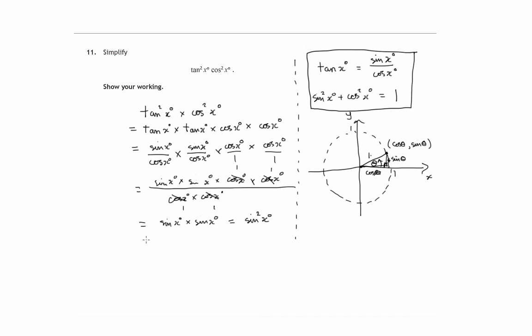Now there are shorter methods that would be acceptable. You could just immediately replace tan squared x by sin squared x over cos squared x. And then the cos x times cos x and the cos x times cos x cancel out, so you'd be left with sin squared x. It's very brief.